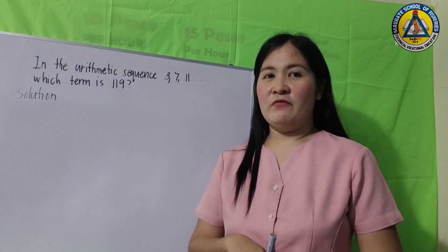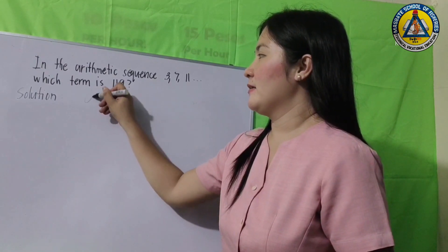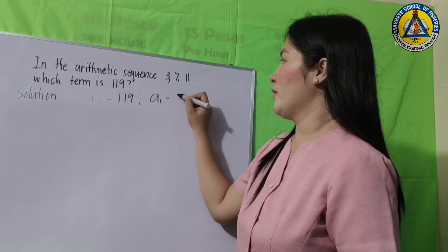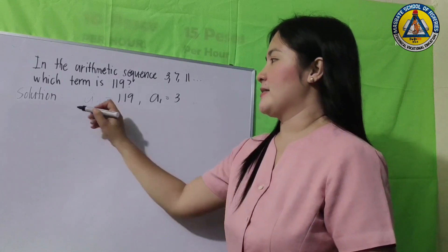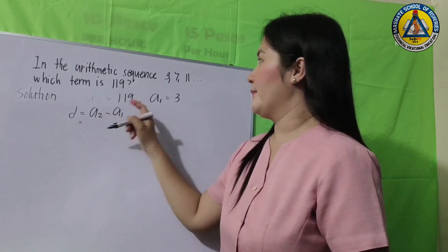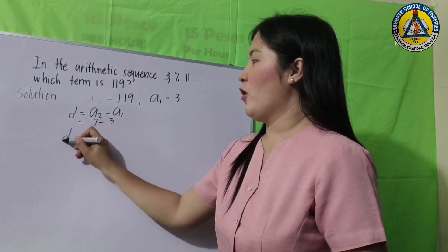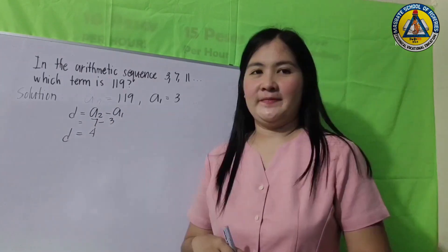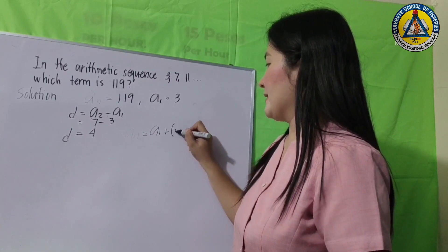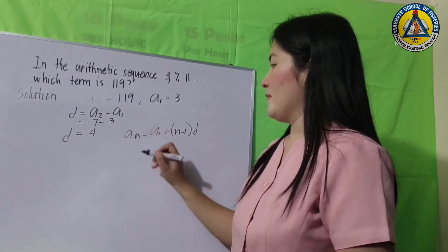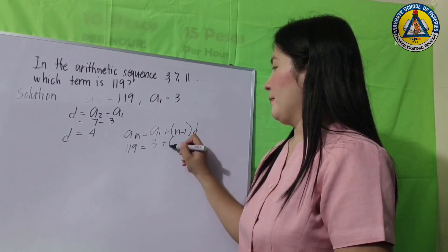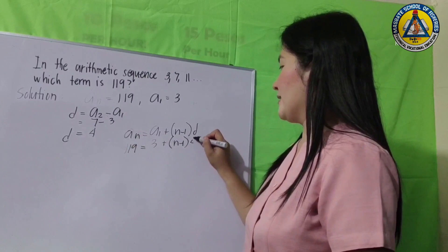Let us have an example. In the arithmetic sequence 3, 7, 11, ..., which term is 119? Given: a(n) = 119, the first term a(1) = 3. The common difference is d = a(2) - a(1) = 7 - 3 = 4. Using the formula a(n) = a(1) + (n - 1) × d, we substitute: 119 = 3 + (n - 1) × 4.